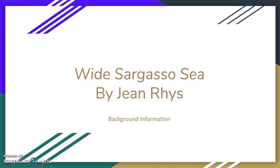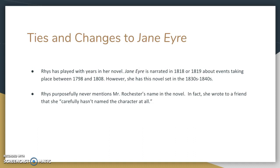As you'll remember, this is some metafiction that has ties to Jane Eyre by Charlotte Bronte. So there were a few ties and changes I should bring up. Rhys has played with years in her novel — Jane Eyre is actually narrated in 1818 or 1819 about events between about 1798 and 1808. However, she has Wide Sargasso Sea set in the 1830s to 1840s. She also purposefully never mentions Mr. Rochester's name — he is really just the husband, although it is very clear that this has ties to Jane Eyre.